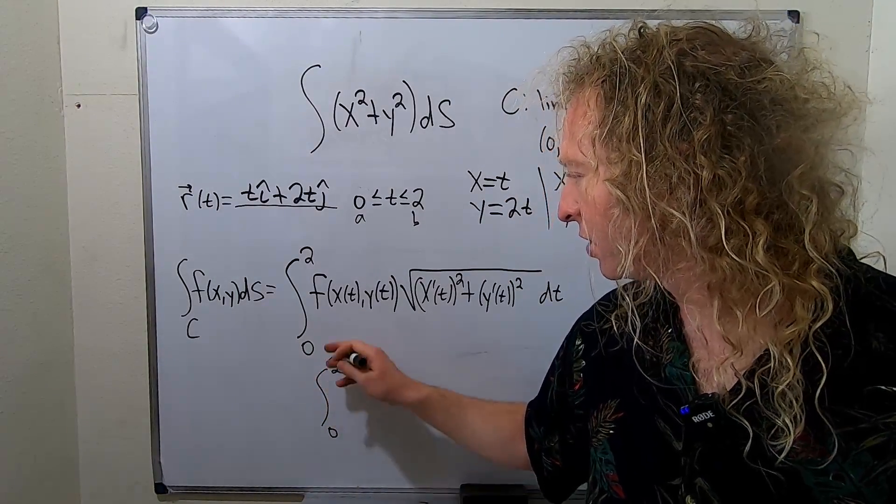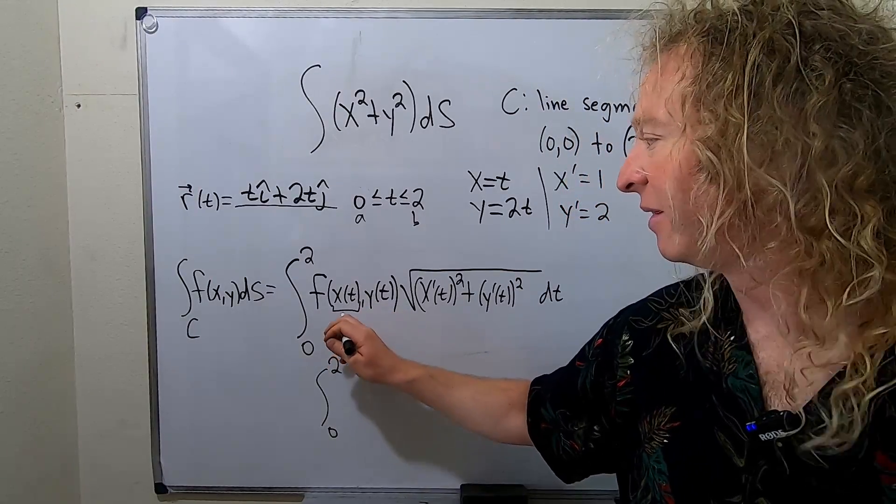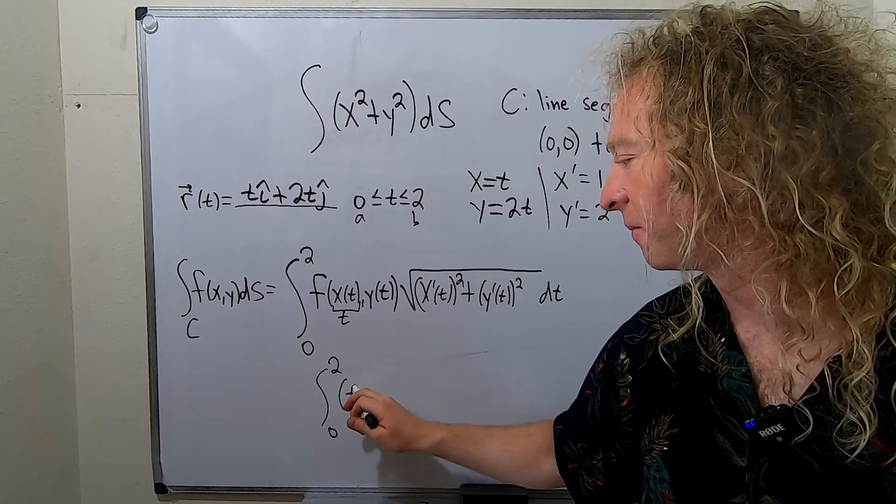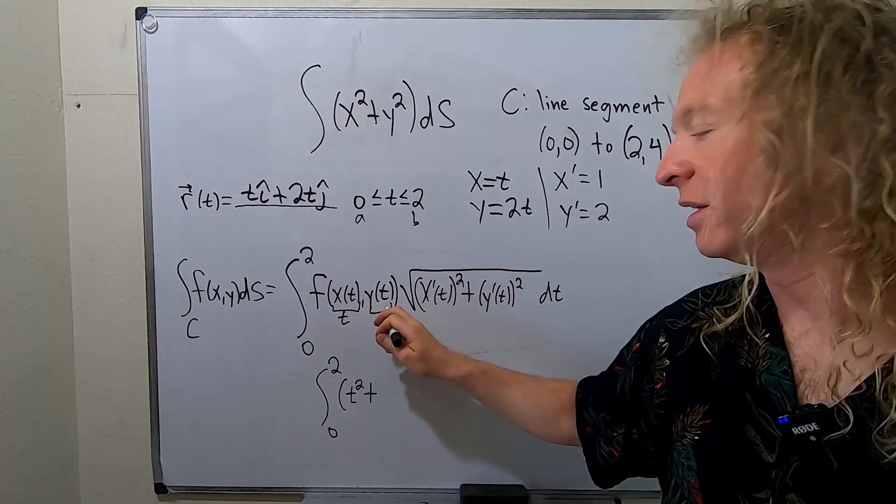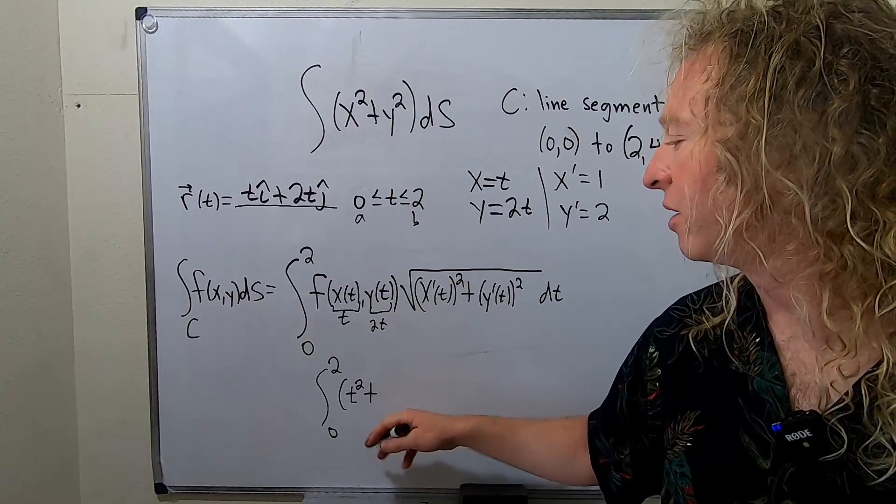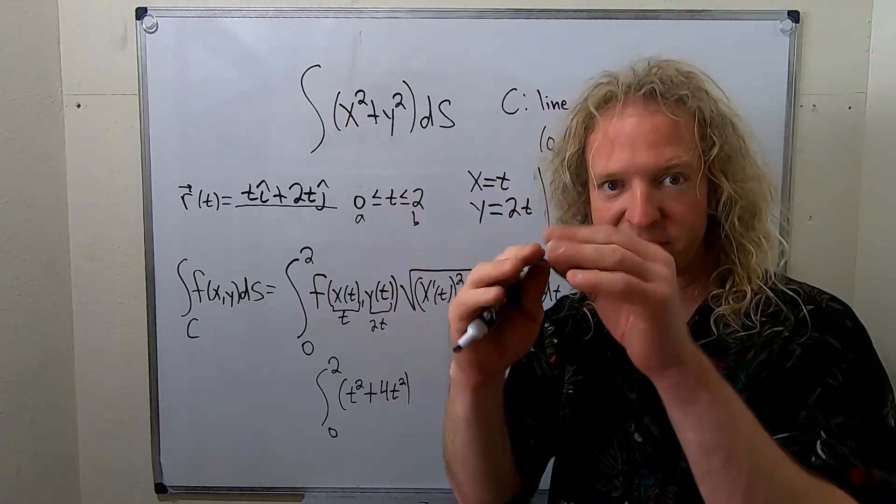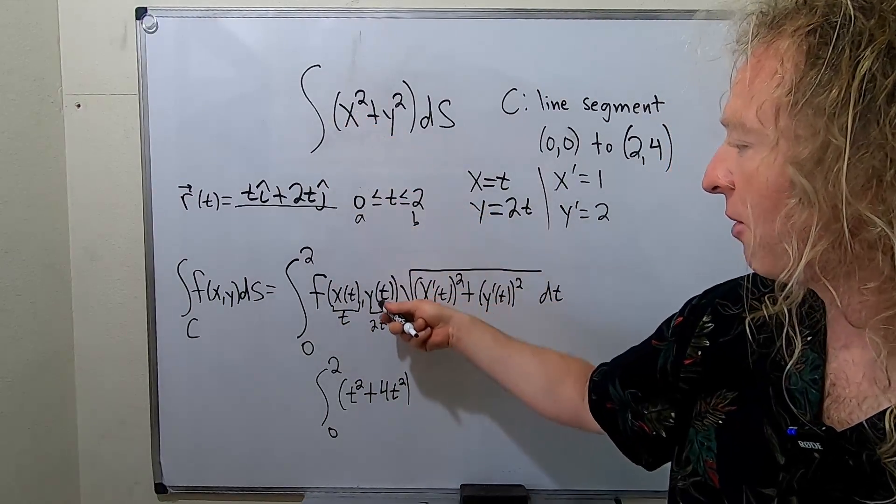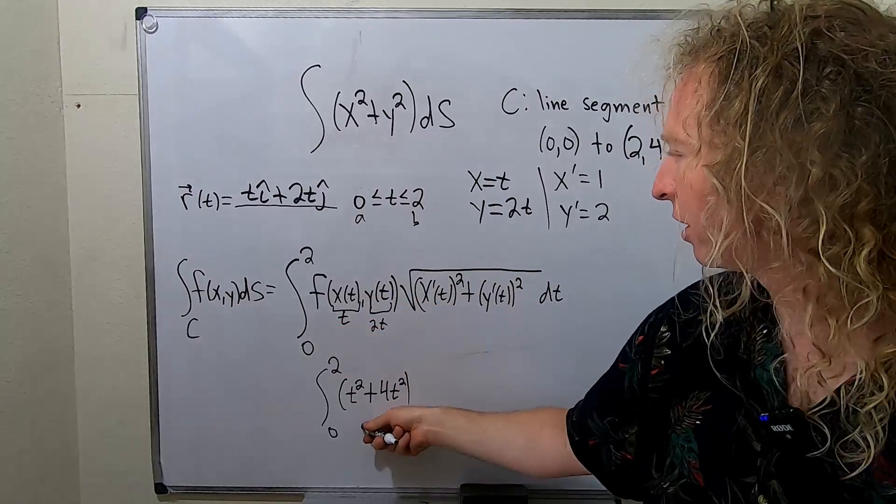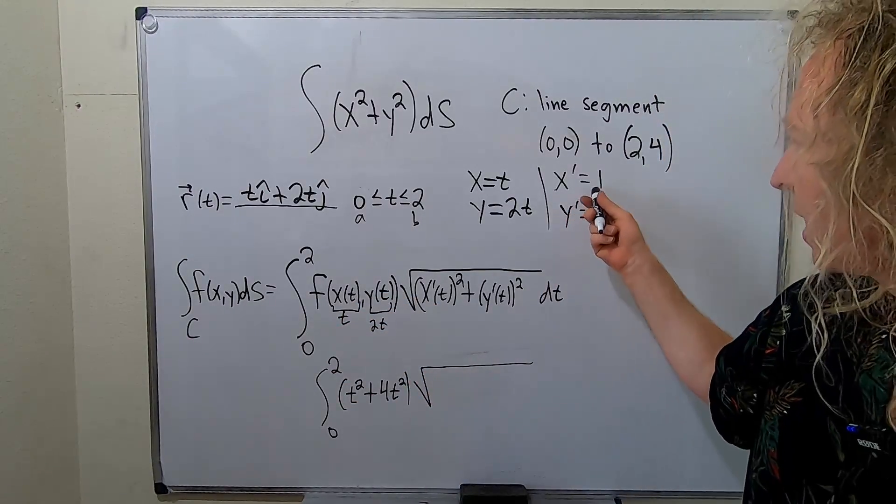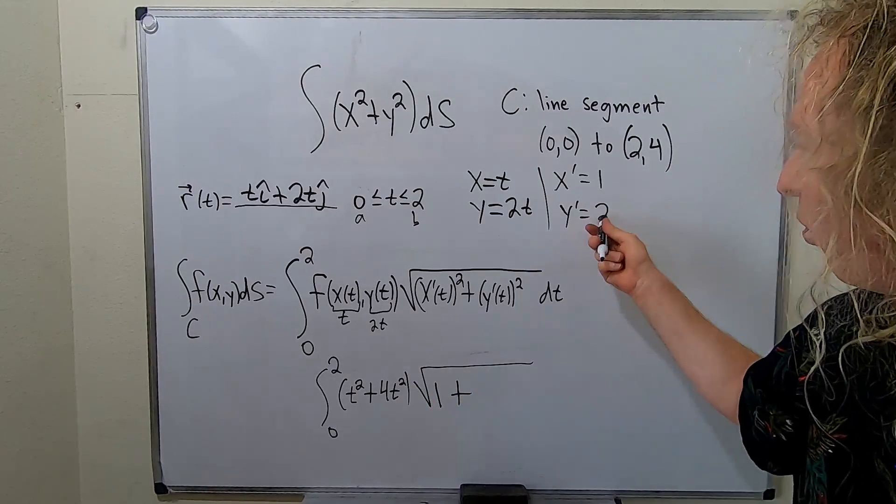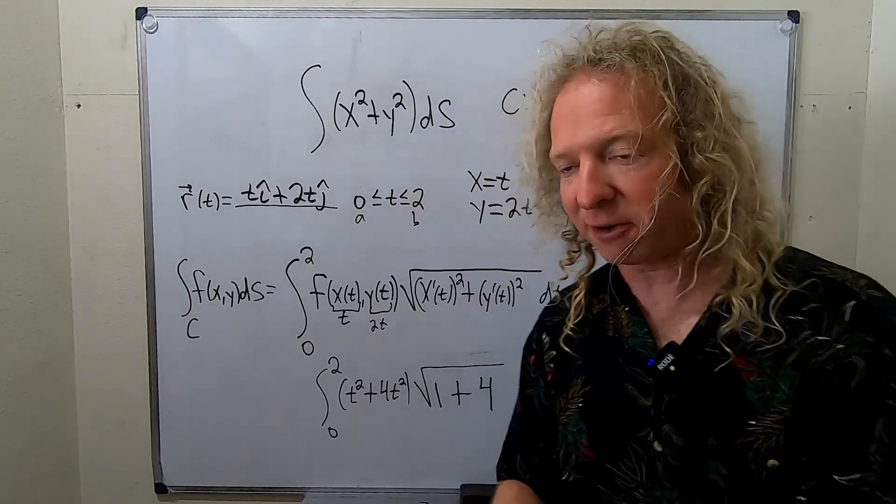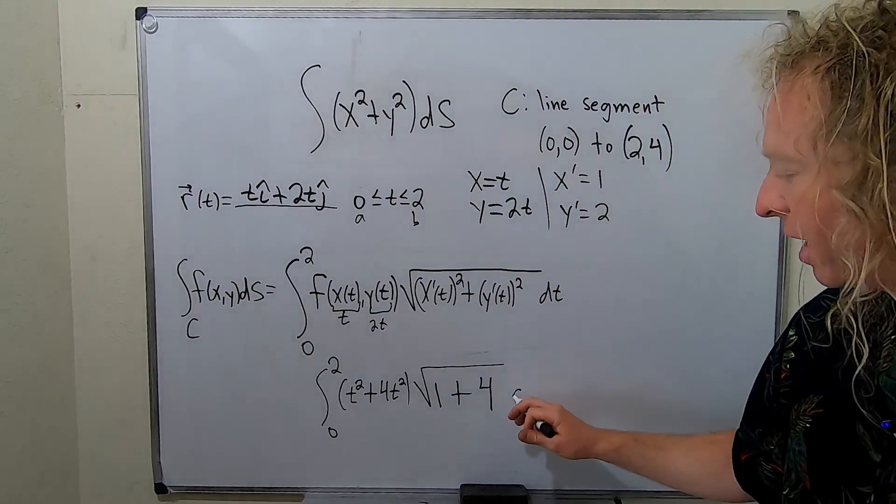Now let's work this out. We're plugging this into the function: t squared plus 2t squared, so 4t squared. We're basically plugging in x equals t and y equals 2t into the function. Then we have the square root: x prime that's 1 squared plus y prime that's 2 squared, so that's 4. The formula takes a bit of getting used to.